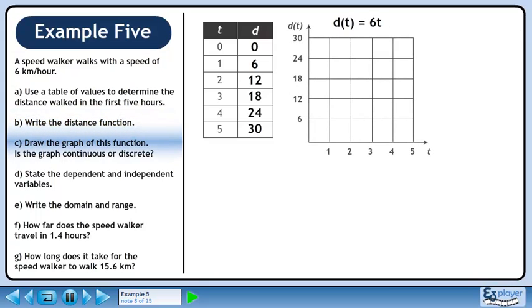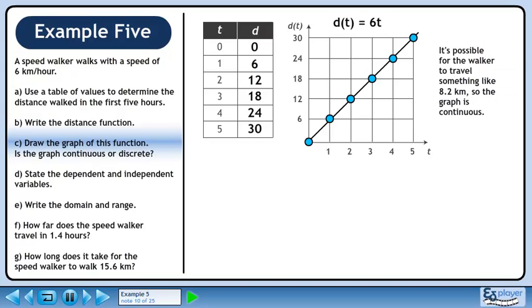In Part C, we will graph the function. Plot the points and draw a line through them. It is possible for the walker to travel something like 8.2 km, so the graph is continuous.